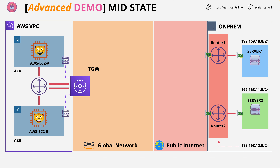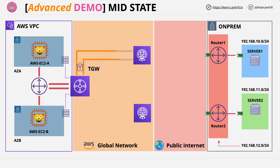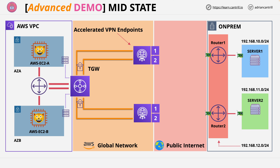Welcome back to stage two of this mini project. In this stage, you're going to create the AWS side of the VPN architecture. You're going to create two VPN attachments for the transit gateway — the transit gateway already exists, created with the one-click deployment. You'll be selecting the accelerated VPN option, which means that AWS will create accelerated VPN endpoints, two per connection. These accelerated endpoints provide transit back to the transit gateway over the AWS global network.